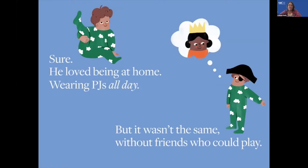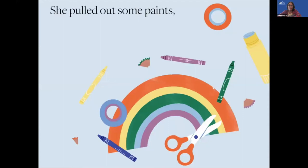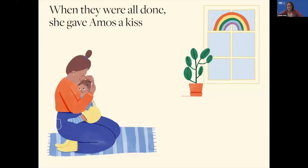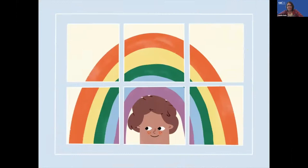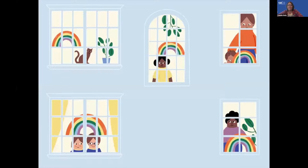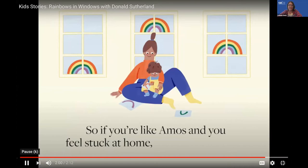Amos' mom saw that he was a bit down in the dumps, so she hatched a quick plan to get him over these lumps. She pulled out some paints and some fun paper too, and they built a beautiful rainbow held together with glue. When they were all done, she gave Amos a kiss and said, 'Let's put this in our window, where it's impossible to miss. See, staying at home is hard for adults too — we like being outside, seeing friends just like you do. Rainbows in windows will help everyone feel less blue. So if you're like Amos and you feel stuck at home, let's make rainbows together to feel less alone.'